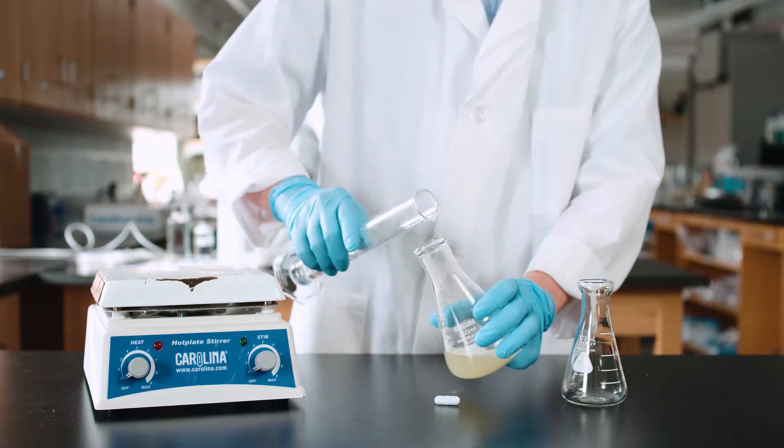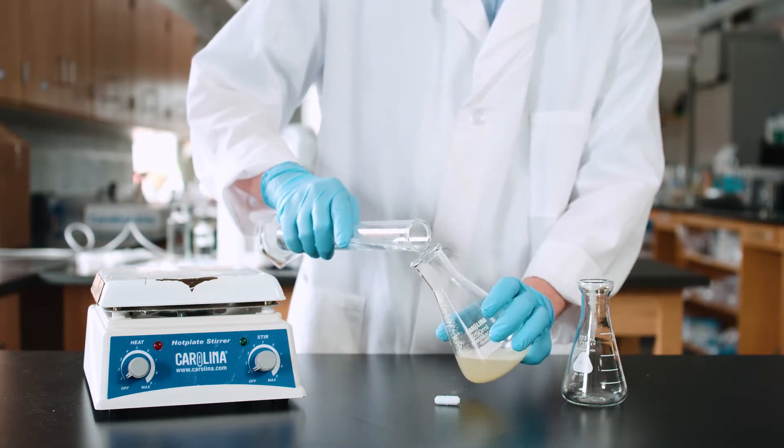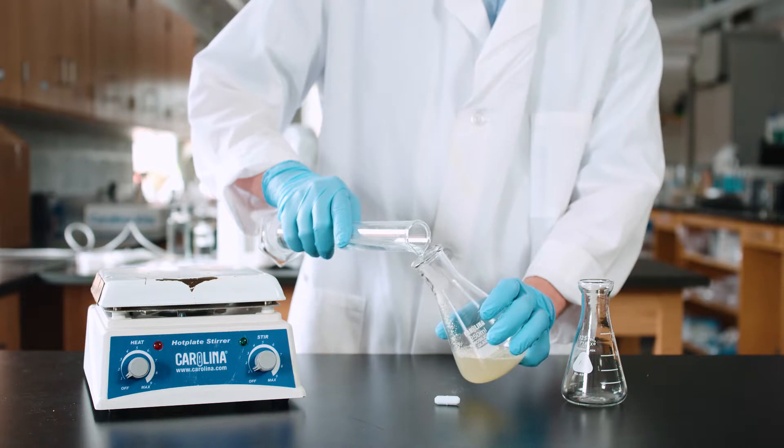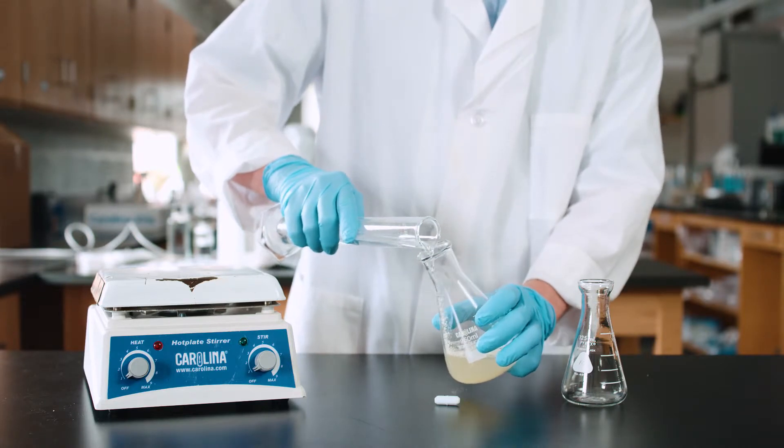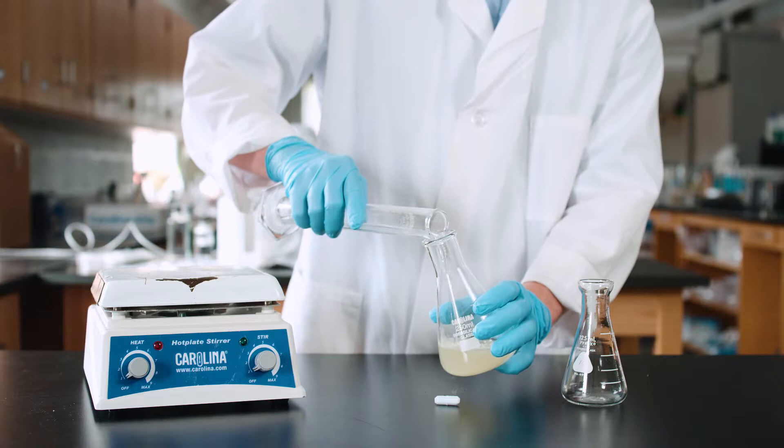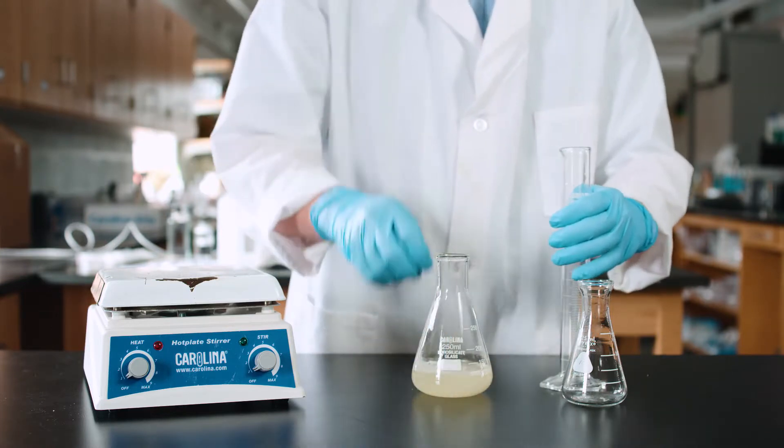Pour the additional portion of distilled water down the sides of the mixing container. This step collects any loose powder from the sides of the container. Agitate for a few minutes by shaking or by using a stir plate and stir bar.